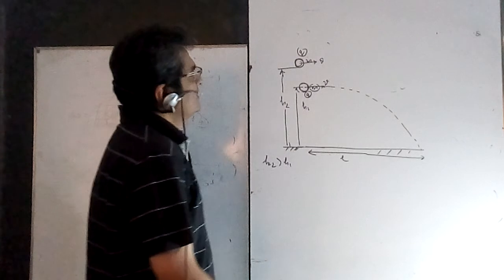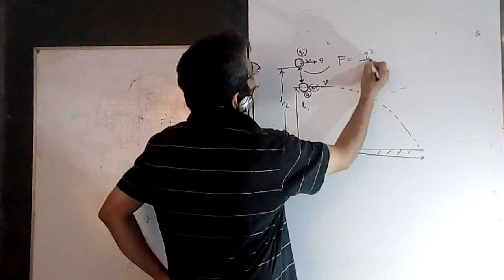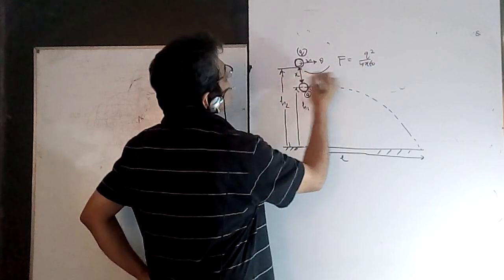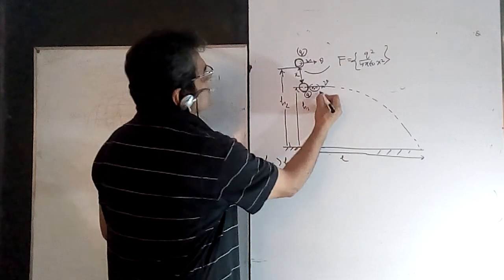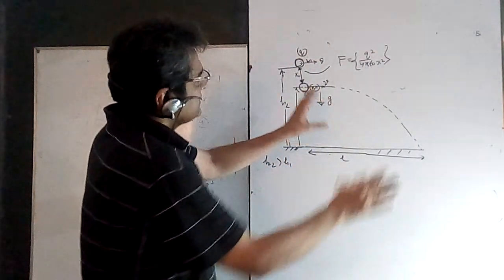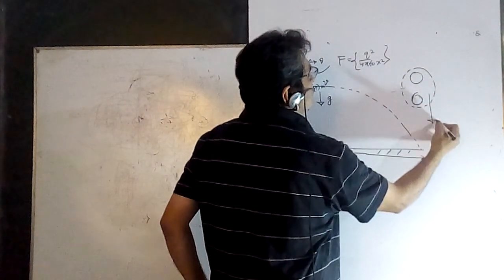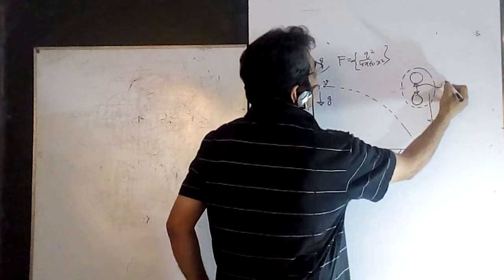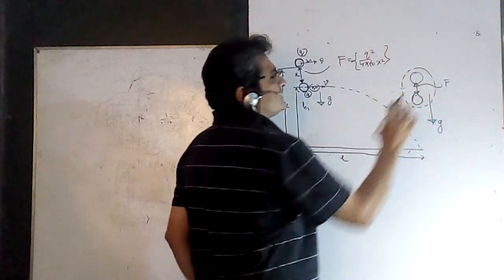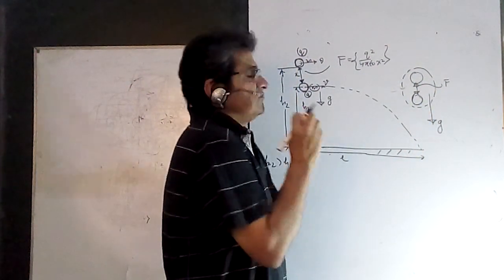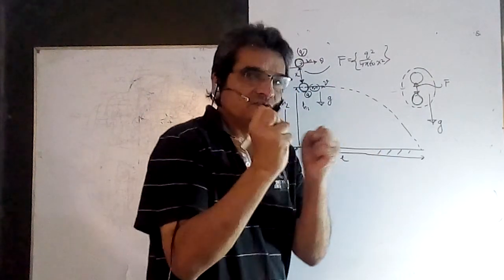There is an interaction force between them and that force is q² / (4πε₀r²), where r is the distance between them, which is a variable. So there is a force between them. But if you take this system of two charges as a whole, the only external force acting on the system is gravity. The interaction force between the two masses will not be responsible for changing the center of mass.